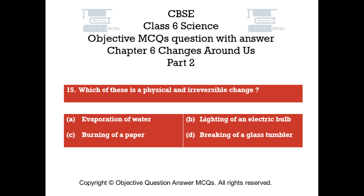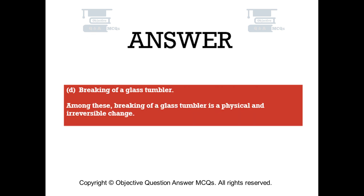Question number 15. Which of these is a physical and irreversible change? Option A: evaporation of water. Option B: lighting of an electric bulb. Option C: burning of paper. Option D: breaking of a glass tumbler. The right answer is Option D: breaking of a glass tumbler. Among these, breaking of a glass tumbler is a physical and irreversible change.